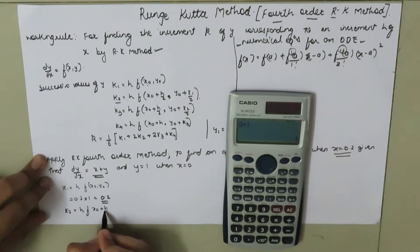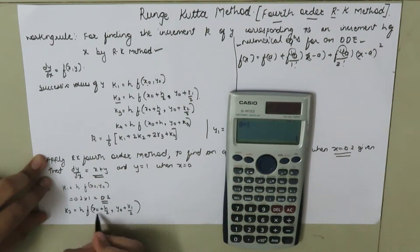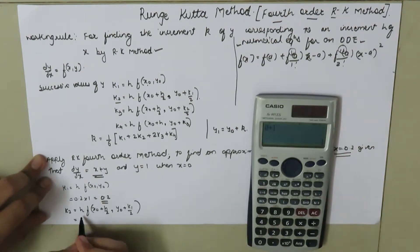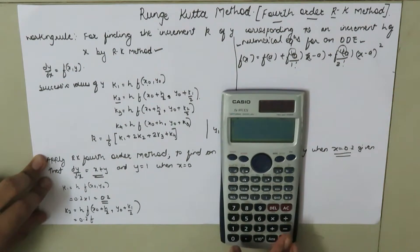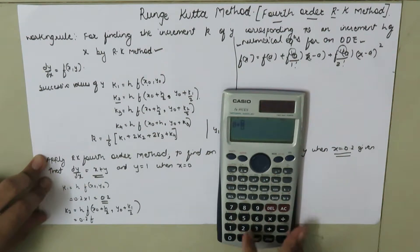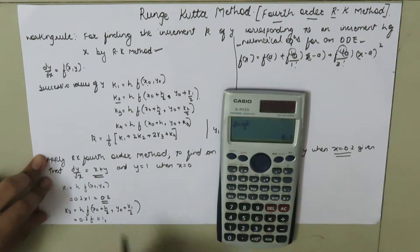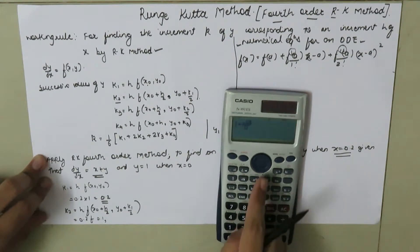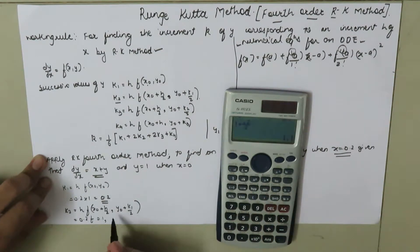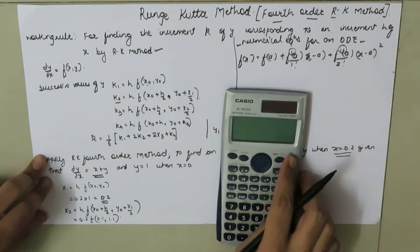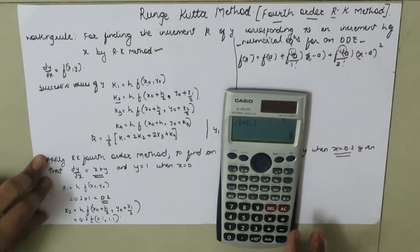k2 = h * f(x0 + h/2, y0 + k1/2). This is 0.2 * f(0 + 0.1, 1 + 0.1). So x = 0.1 and y = 1.1. The function value is 0.1 + 1.1 = 1.2. So k2 = 1.2 * 0.2 = 0.24.